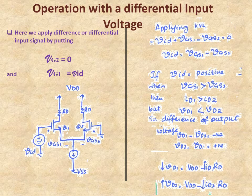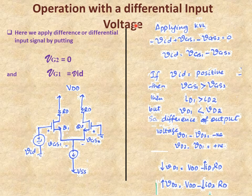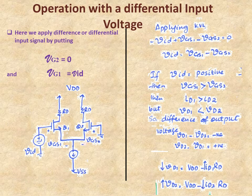The signal on gate 2 is 0 and on gate 1 is VID. This is called the differential input voltage. Differential means any input voltage which is the difference between the two gate voltages.